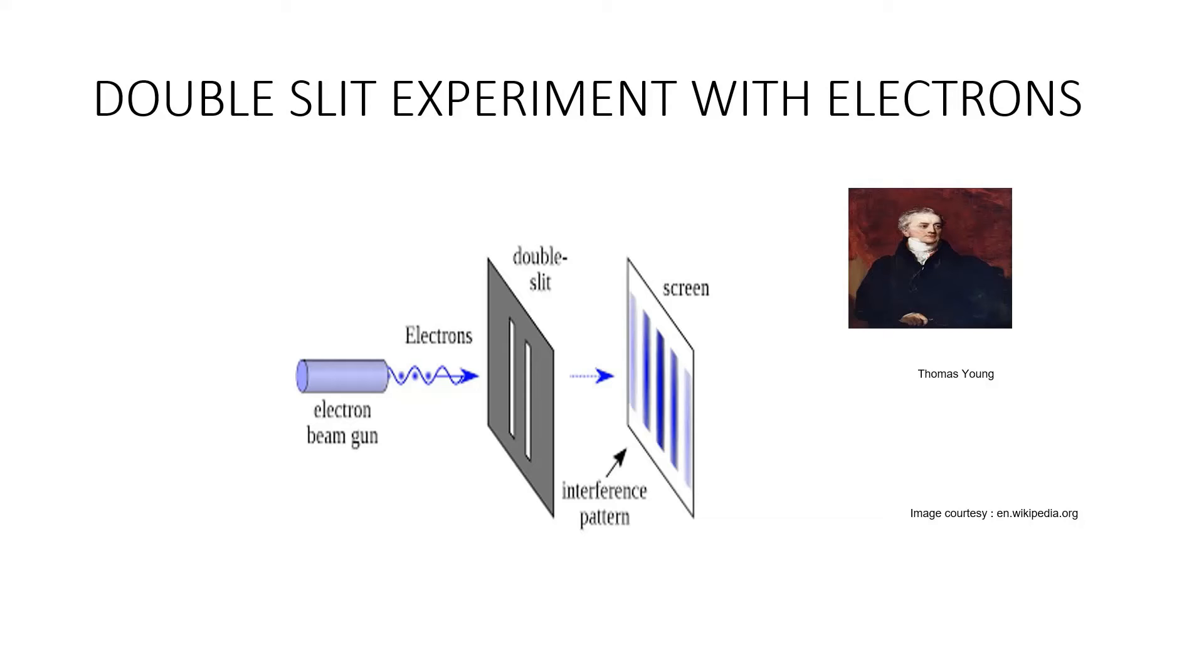The double-slit experiment can also be performed with quantum particles like electrons using an electron gun. Let us block off one of the slits. Then the electrons will fall on the photosensitive screen and produce a flash of light and it behaves like matter.